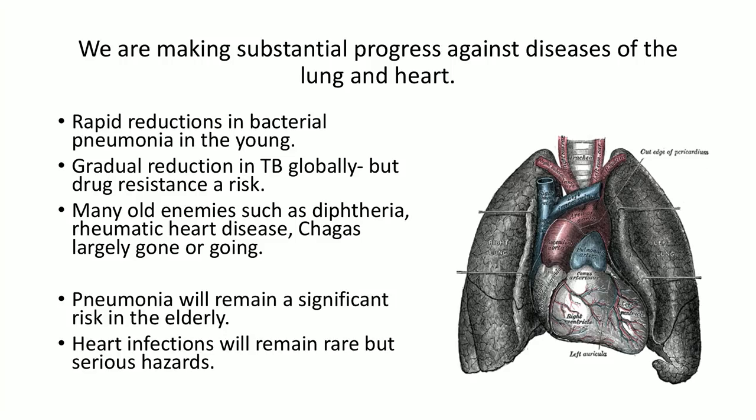In summary, we are making substantial progress against lung and heart infections — rapid reductions in bacterial pneumonia particularly in children, and gradual global reduction in TB, though drug resistance remains a significant risk. Many old enemies such as diphtheria, rheumatic heart disease, and Chagas are largely gone or going. But pneumonia will remain a significant risk in the elderly for the rest of our lifetimes, and heart infections will remain a rare but significant hazard.